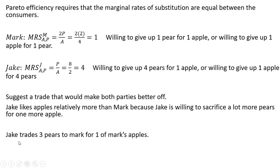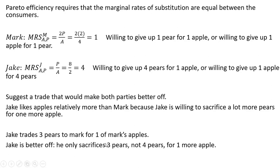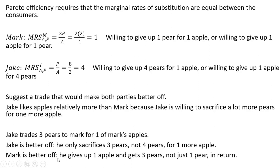Here's a proposed trade: Jake trades three pears to Mark for one of Mark's apples. Jake is better off because he only sacrifices three pears for one more apple, not the four he's willing to sacrifice. Mark is better off too — he gives up one apple and gets back three pears, not just one pear. So both parties are made better off, making this a Pareto-improving trade.